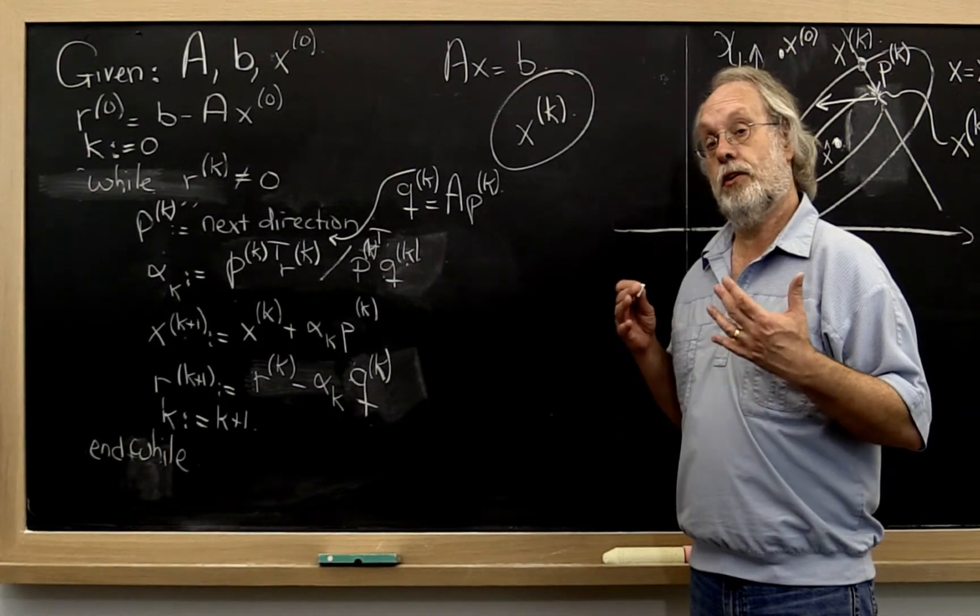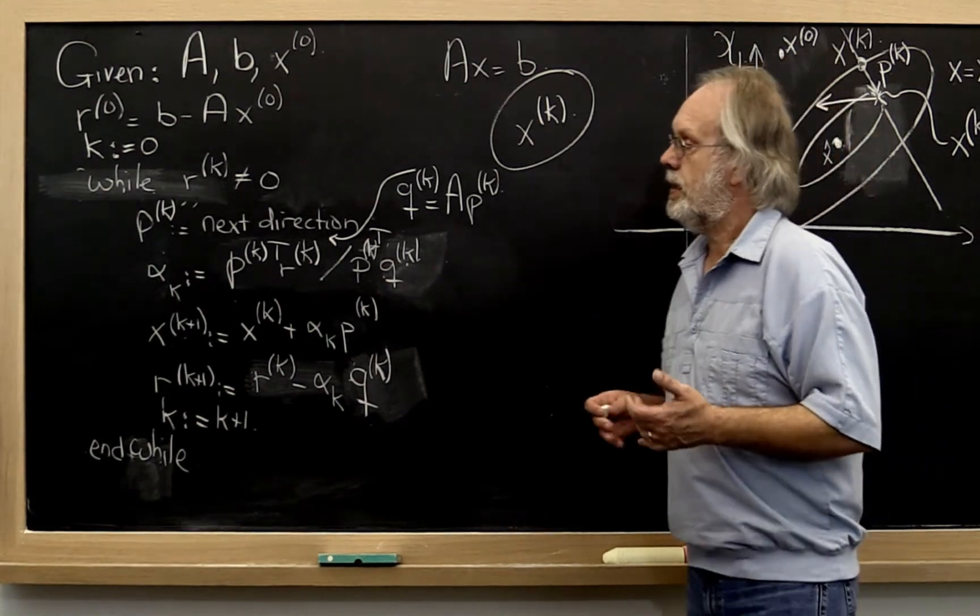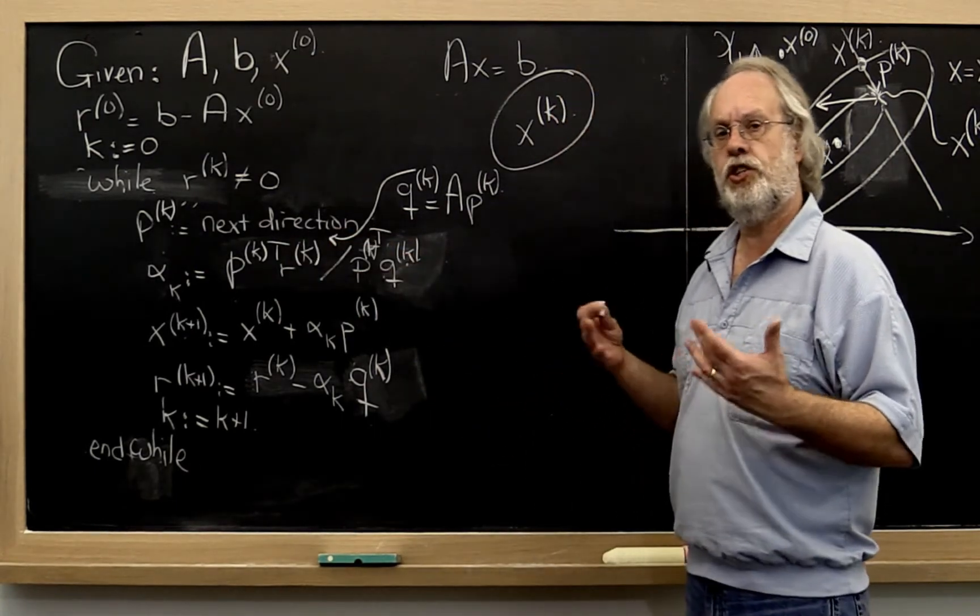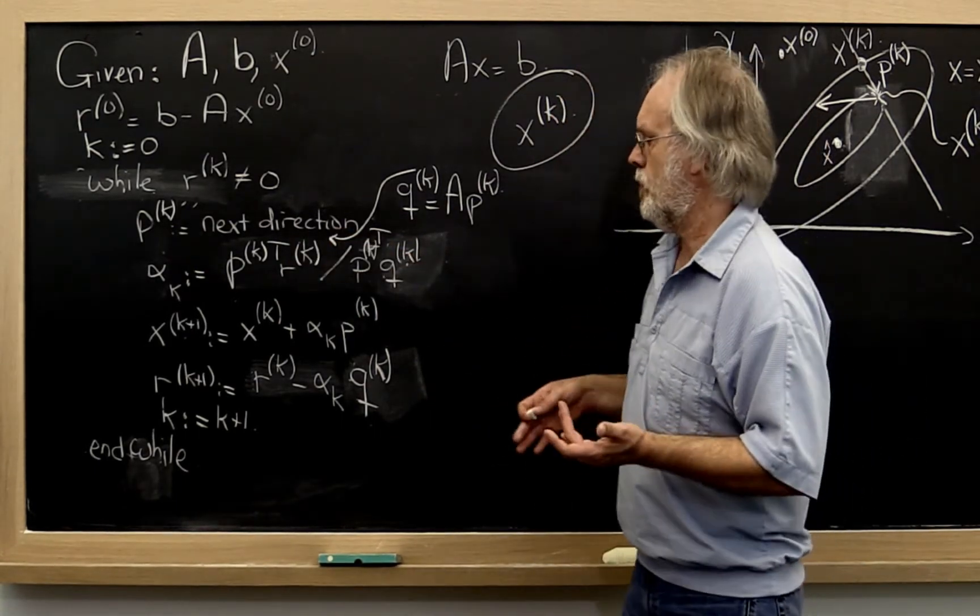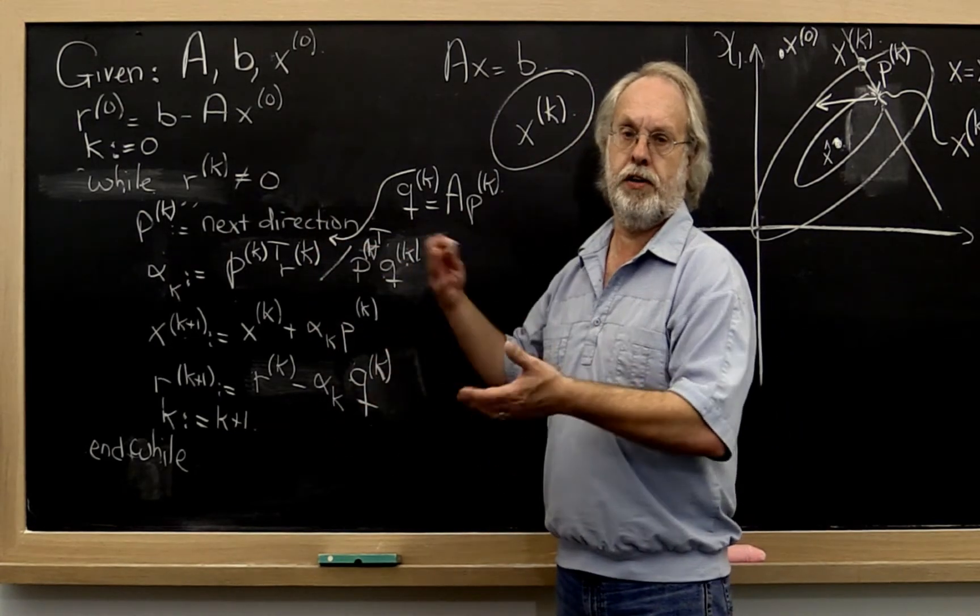So now we arrive at the question of how to pick search directions. We want to be able to pick these search directions relatively cheaply, either computing them from values we already have from previous iterations.